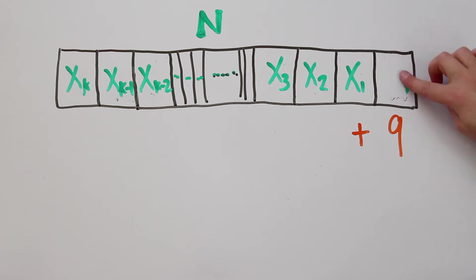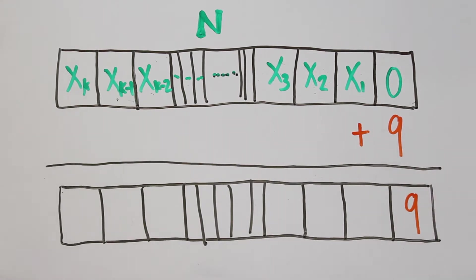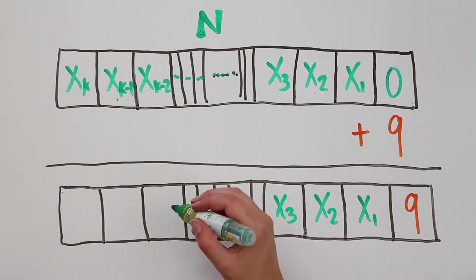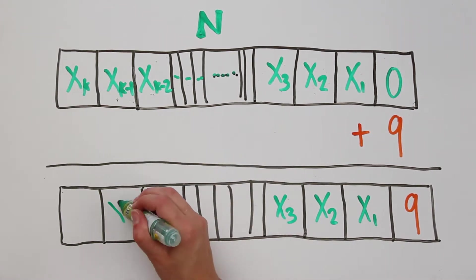First, let's pretend that the 1's place is 0, or x0 equals 0. In this case, we don't carry over any 10s, and so all of the digits remain the same except the 1's place, which changes from 0 to 9.